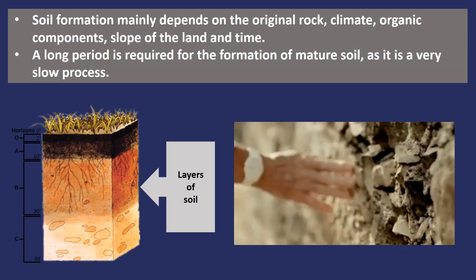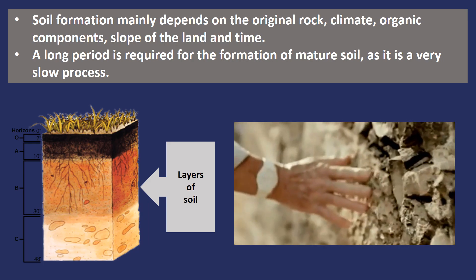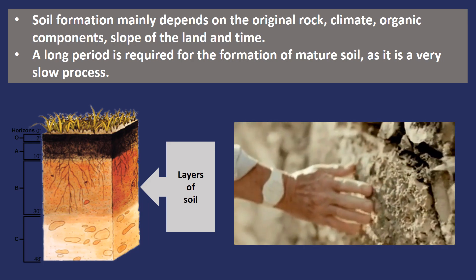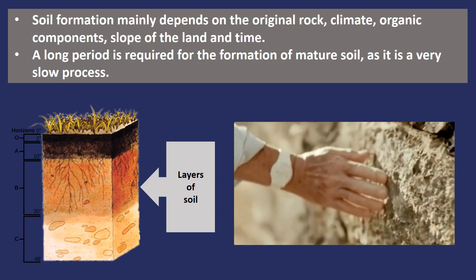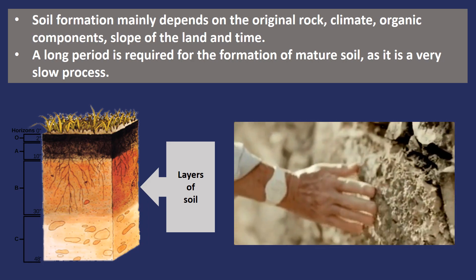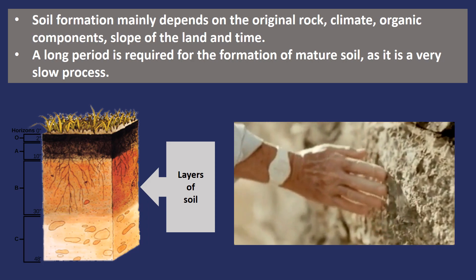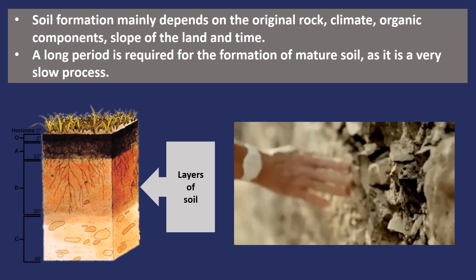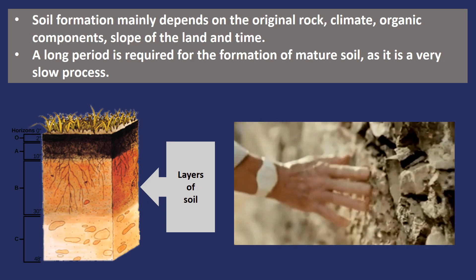Soil formation mainly depends on the original rock, climate, organic components, slope of the land, and time. Soil contains air, water and minerals, as well as plant and animal matter, both living and dead. The different types of soil depend on the types of rocks and climate in different regions. It takes about thousands of years to form a 2.5 cm thick layer of soil. The old and well-developed soil is called a mature soil.